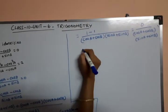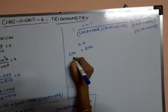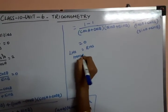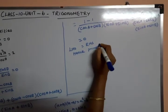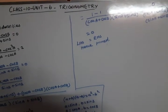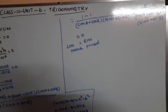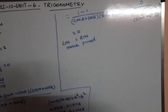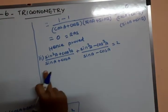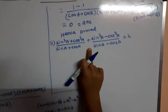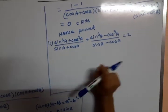Rearranging: (sin²A plus cos²A) minus (sin²B plus cos²B) equals 1 minus 1 equals 0. So LHS equals 0 equals RHS. Hence proved. Second subdivision: (sin³A plus cos³A) divided by (sinA plus cosA) plus (sin³A minus cos³A) divided by (sinA minus cosA) equals 2.